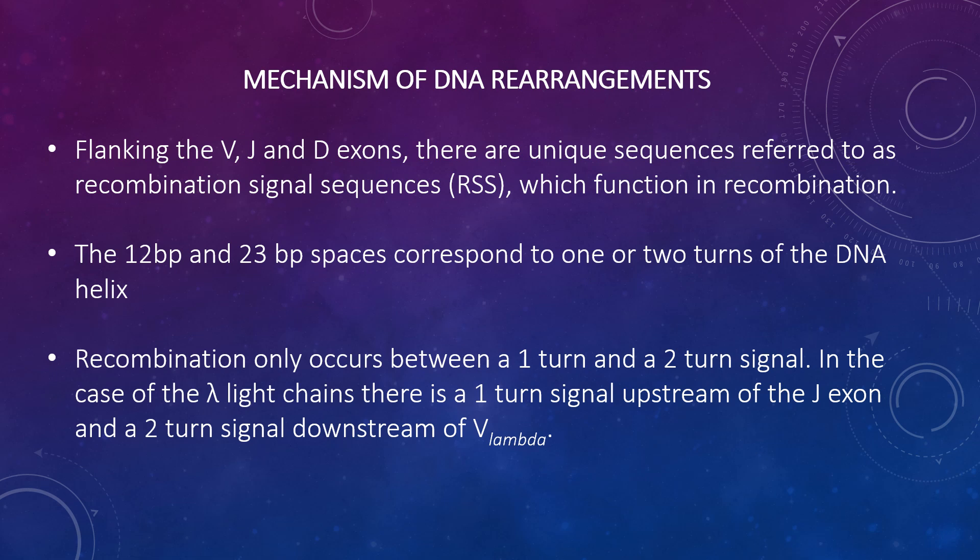Flanking each exon are unique sequences called recombination signal sequences (RSS) that function in recombination. Each RSS consists of a conserved nonamer and a conserved heptamer that are separated by either 12 or 23 base pairs. The 12 and 23 base pair spacers correspond to one or two turns of the DNA helix. Recombination only occurs between a one-turn and a two-turn signal. In the case of heavy chains, there are one-turn signals on each side of the D-exon, a two-turn signal downstream of the V-region, and a two-turn signal upstream of the J-exon, ensuring that correct recombination events occur.